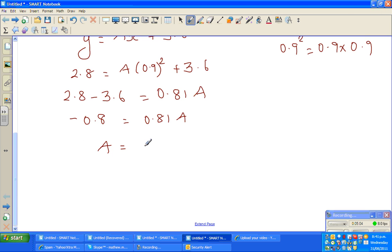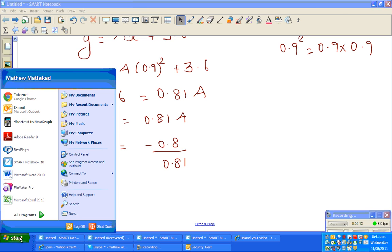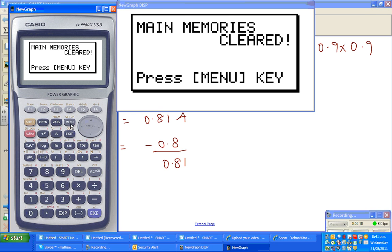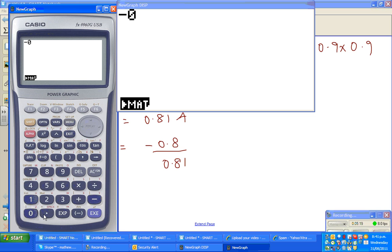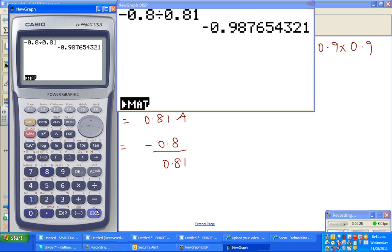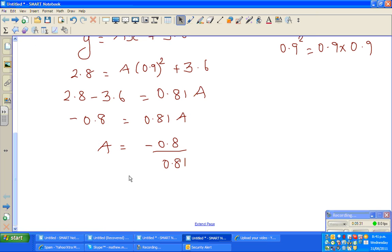So a is negative 0.8 over 0.81. And that's what I told you, it has to be negative. So again, let me get the calculator out. Menu, run. So negative 0.8 divided by 0.81 is negative 0.9877 in four significant figures or four decimal places. So a is negative 0.9877 in four significant figures.